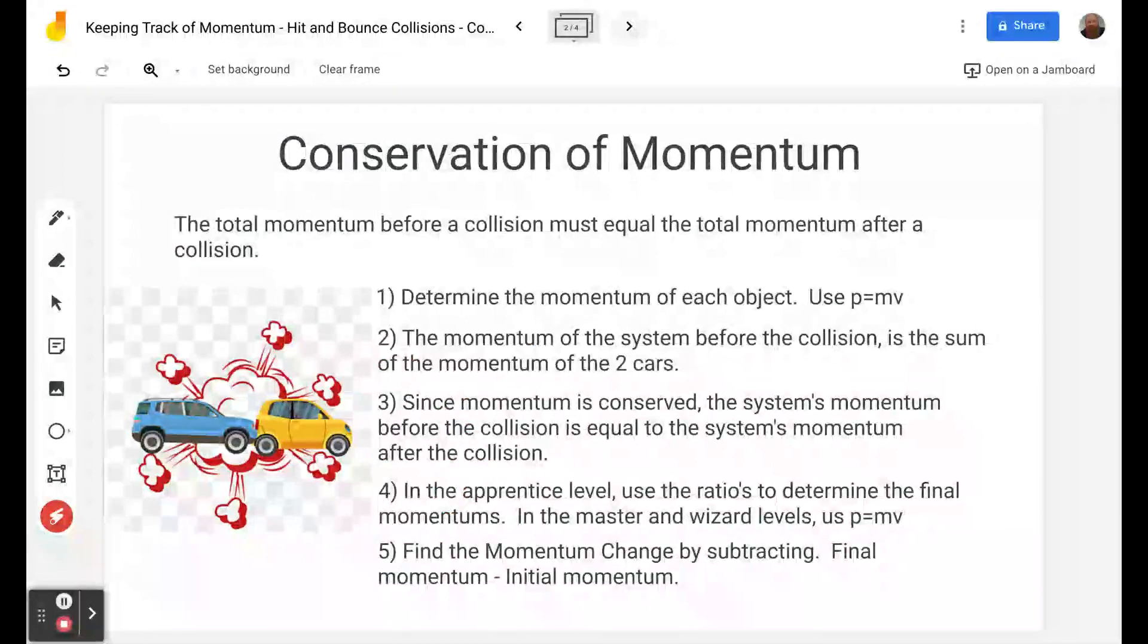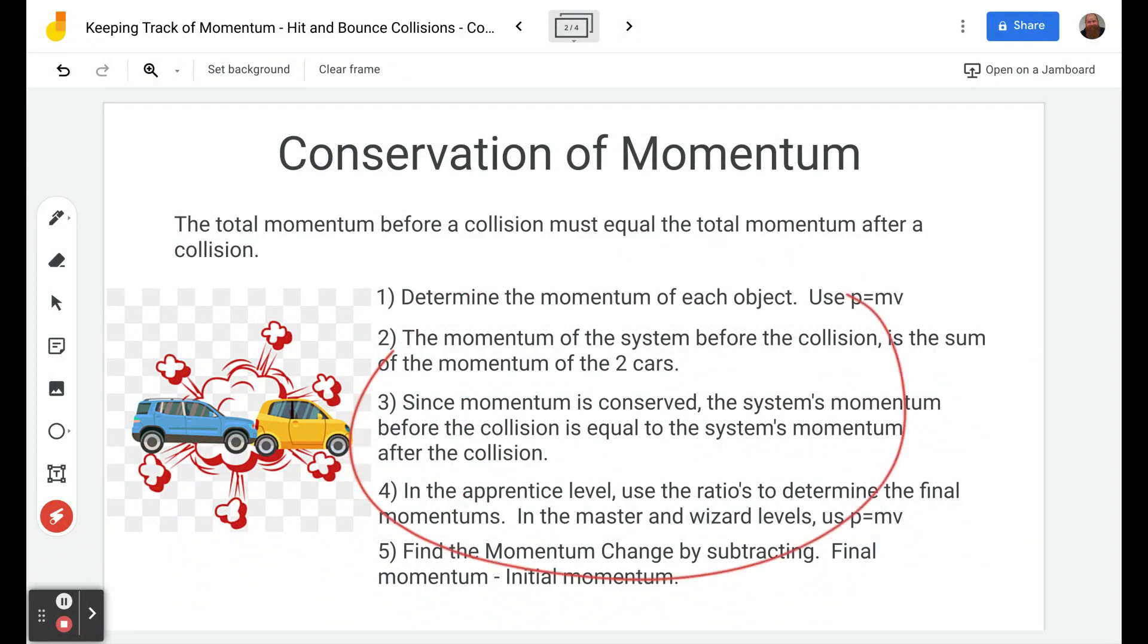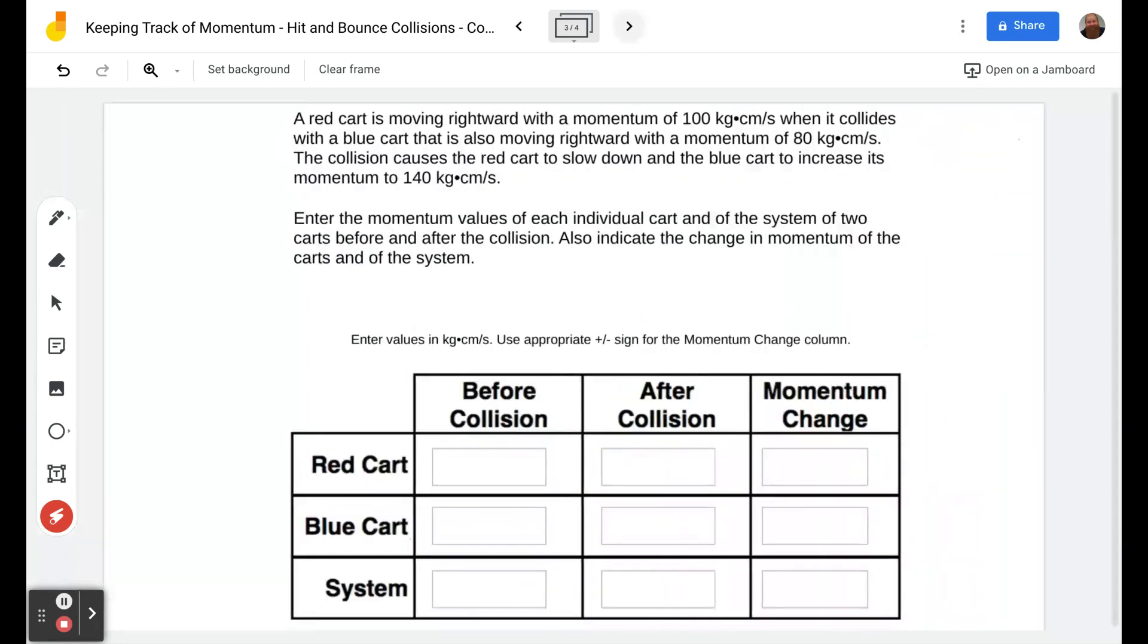I've already done a video on the basic idea of conservation of momentum and a video describing this screen—I'll link both of those. We're going to get straight into the two examples I want to go through. The difference between this one and the last one is that the objects will have different momentums after the collision because they're bouncing apart, not sticking together.